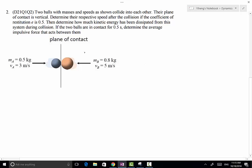In this problem we have two balls colliding into each other. Their masses and initial velocities are both given, and we need to determine their respective speeds after the collision if the coefficient of restitution between them is 0.5.